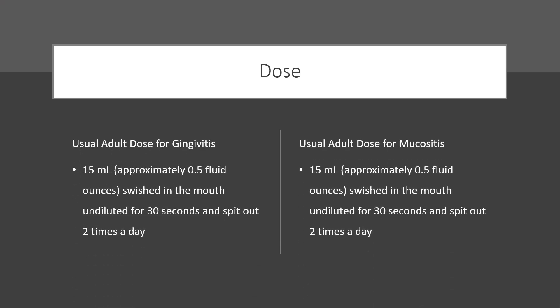Dose — Usual adult dose for gingivitis: 15 milliliters (approximately 0.5 fluid ounces), swished in the mouth undiluted for 30 seconds, and spit out 2 times a day.